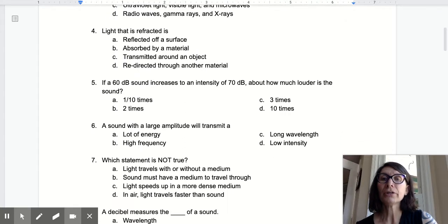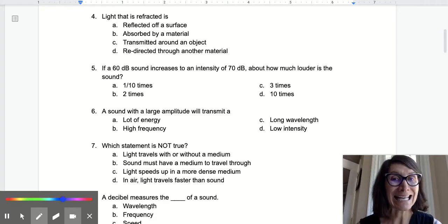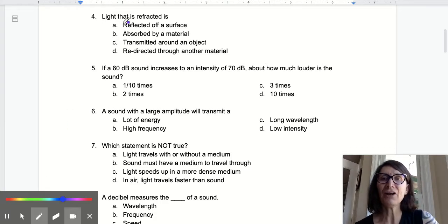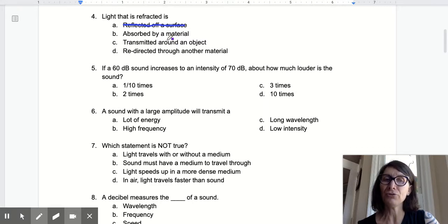Number four, the light that is refracted is reflected off a surface. No, that's ridiculous. Reflected and refracted are different. Absorbed? No. But that really doesn't describe what's happening here. But I'm going to leave that just in case. Transmitted around an object. No, my teacher threw that word in there to mess me up. Redirected to me means bent through another material. This sounds like the better choice than absorbed. And so I'm going to write redirected.